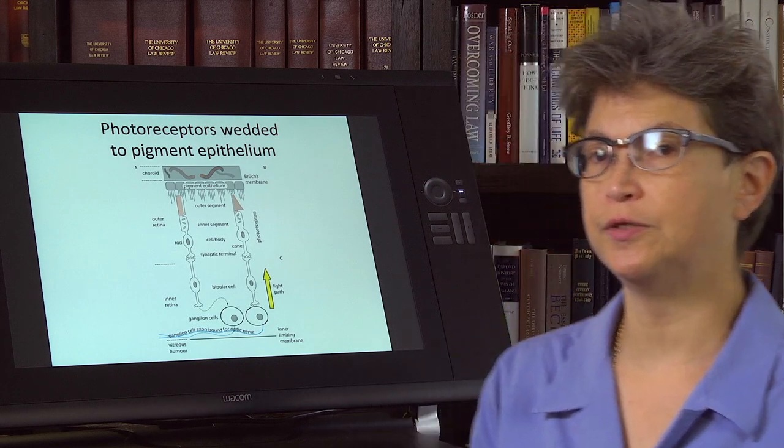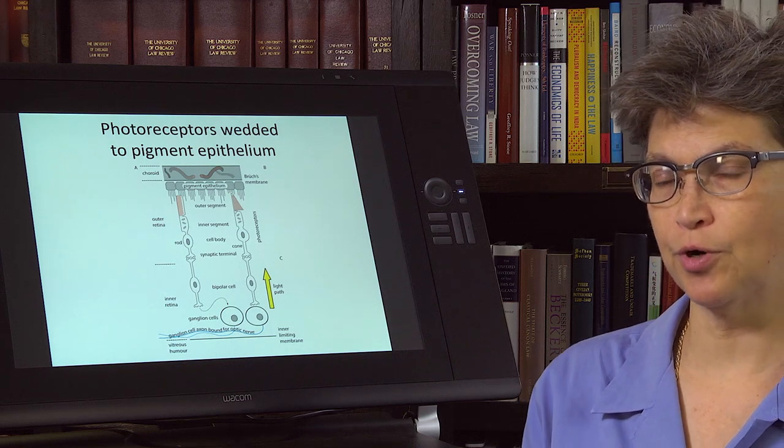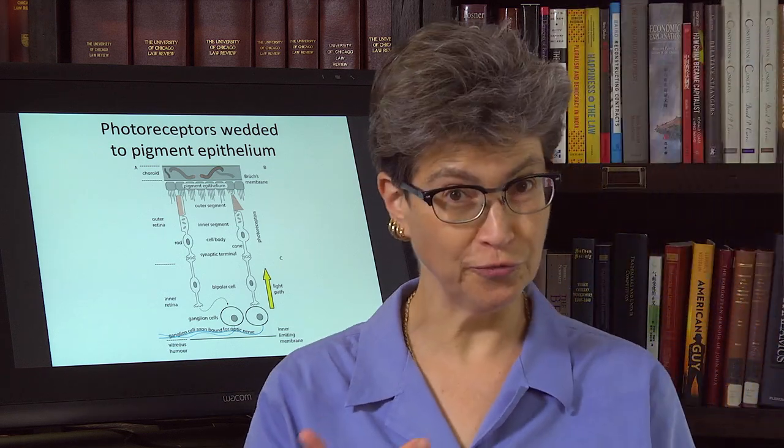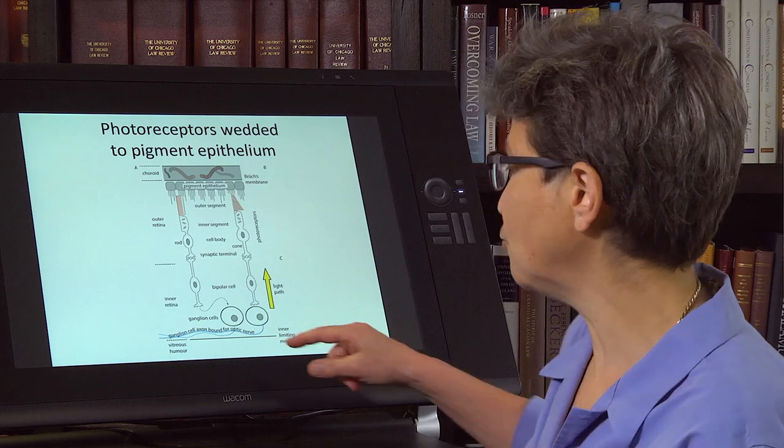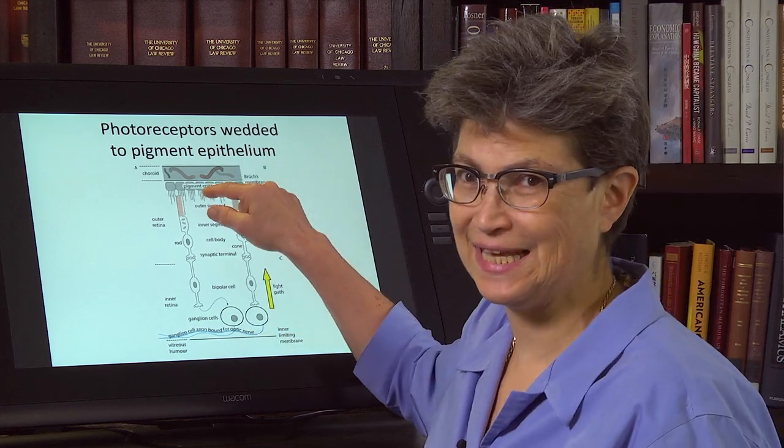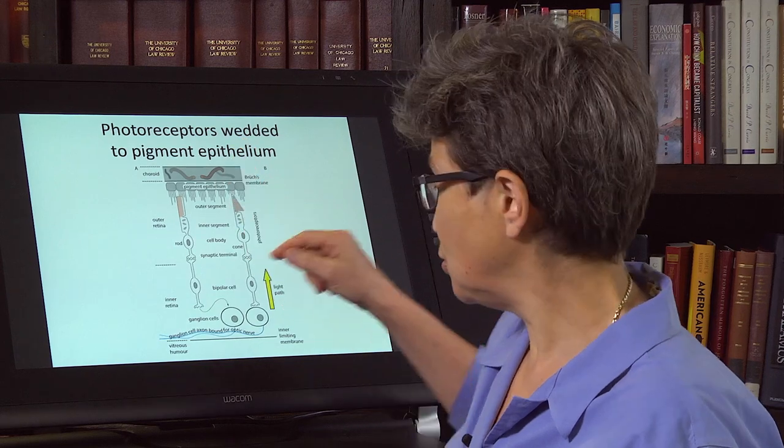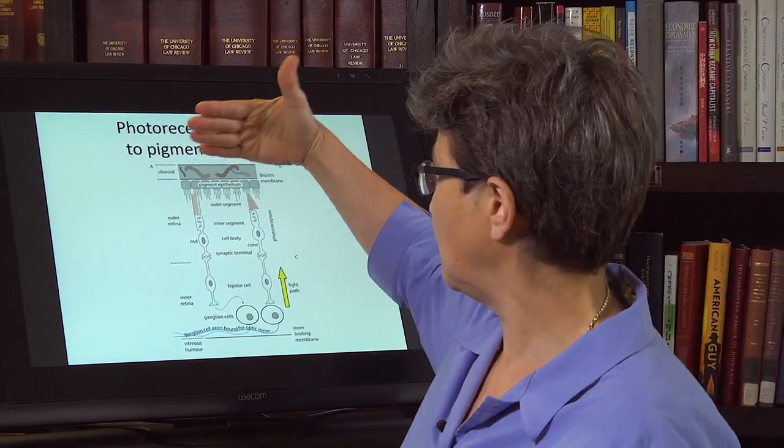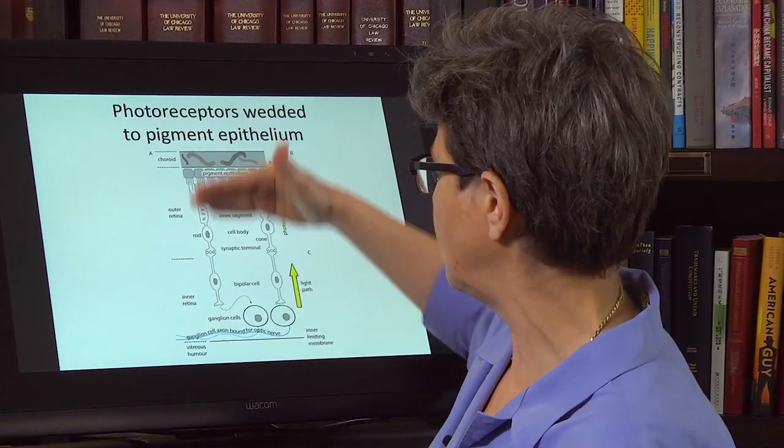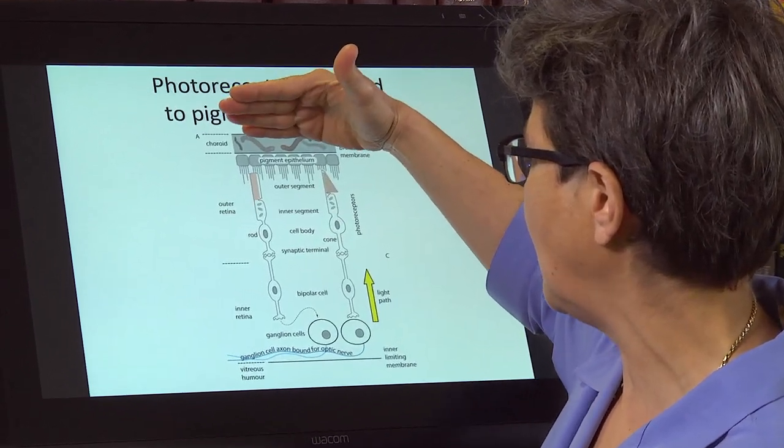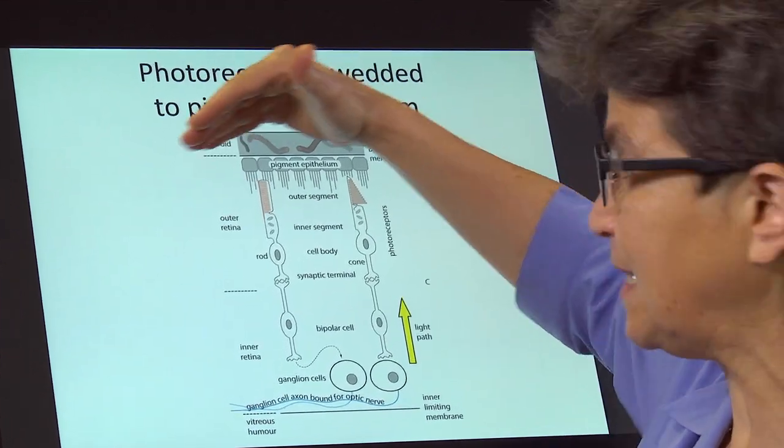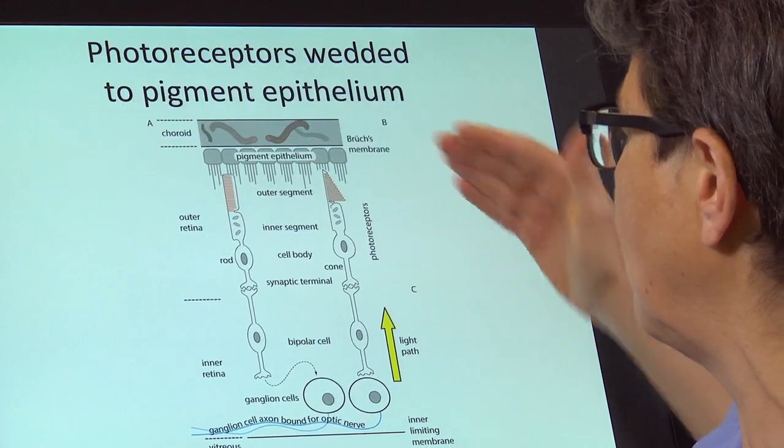One of the most peculiar things about the organization of the eye, I think when you first see it, is that the photoreceptors are the last thing that light reaches in the retina. So if this is a diagram of the back of the eye, this is the choroid, this is the outer limit of the back of the eye.